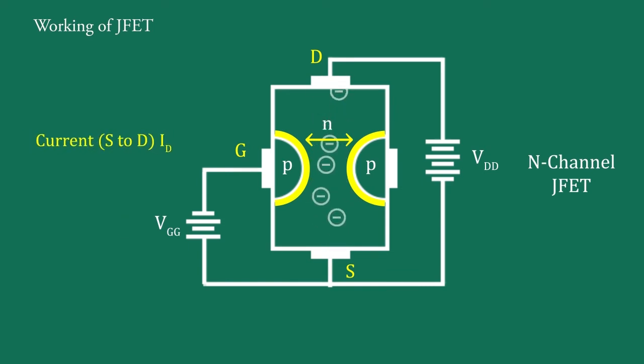Here, the current from source to drain can be controlled by the potential, that is electric field of the gate. Therefore, the device is called field effect transistor. This is N channel JFET. So, the channel, that is bar, is made up of N type material. Hence, the current ID is established by flow of electrons only.